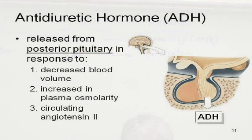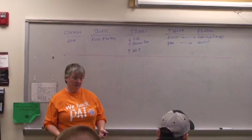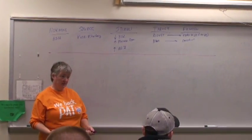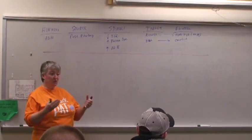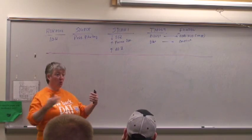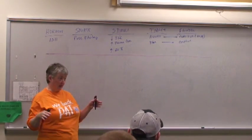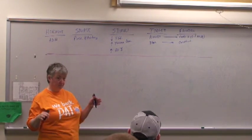So if you start bleeding out, your blood volume drops and your blood pressure drops. Or if you get dehydrated, your blood gets too concentrated. You need to put water back into the bloodstream and dilute everything back out.